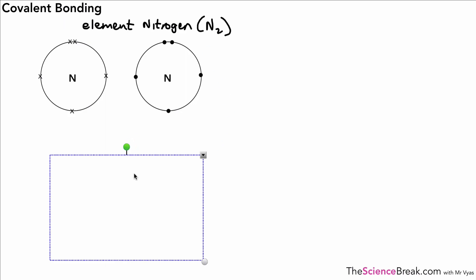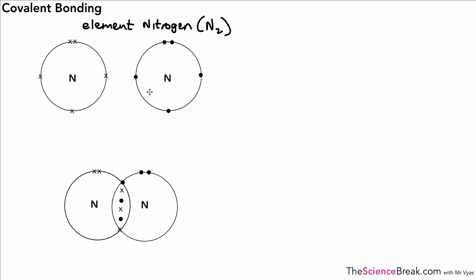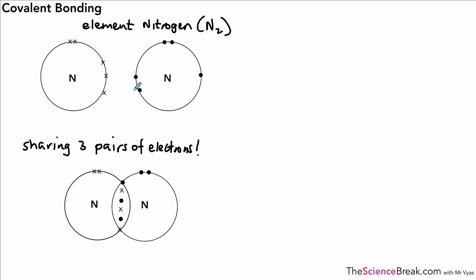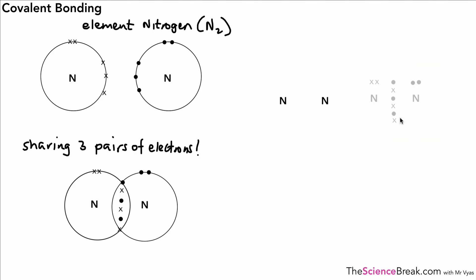The last one, again slightly tricky, is nitrogen — N₂. In this case we share three pairs of electrons, so we don't have a double bond between the two nitrogen atoms; we have what's called a triple bond. We rearrange and move the electrons around to show our triple bond. In our second method, with three pairs of electrons shared, and finally we show it as a triple bond by drawing three lines between the two nitrogen atoms — there's our triple bond.